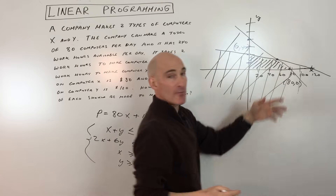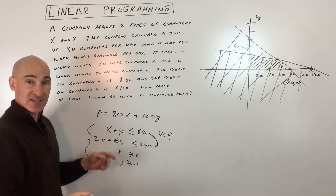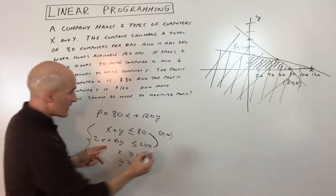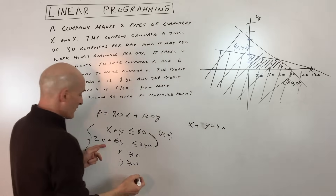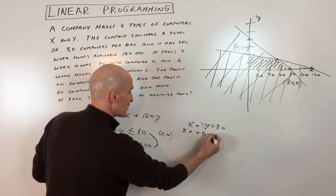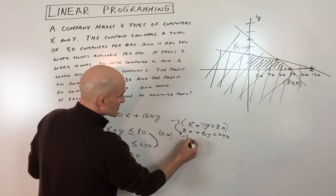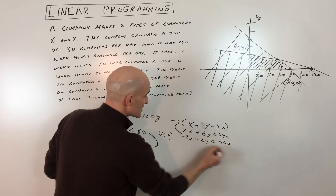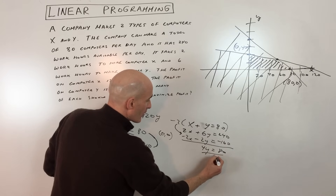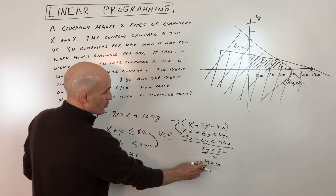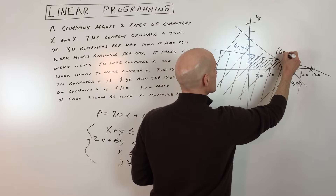Treating the constraint lines as equations — X plus Y equals 80, and 2X plus 6Y equals 240 — we multiply the first equation by negative 2 to get negative 2X minus 2Y equals negative 160. Adding the two equations gives 4Y equals 80, so Y equals 20. Substituting back, X equals 60. So the intersection point is (60, 20).